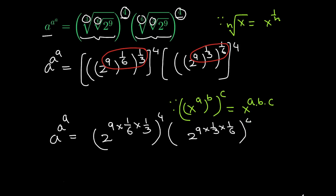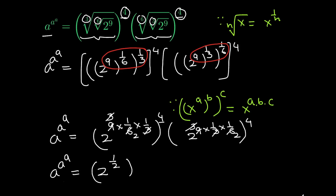So let's do some cancellations: 3 times 3 is 9, 3 times 2 is 6. So in the next step, a raised to the power a raised to the power a is equal to 2 raised to the power 1 over 2, raised to the power 4, times 2 raised to the power 1 over 2, raised to the power 4.